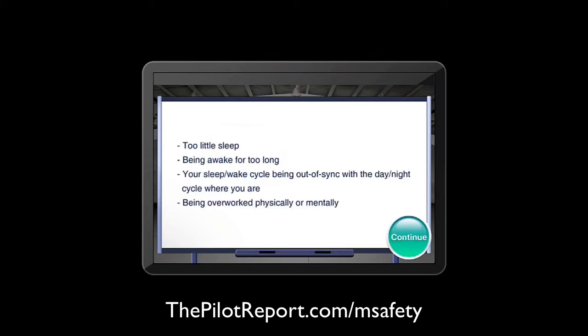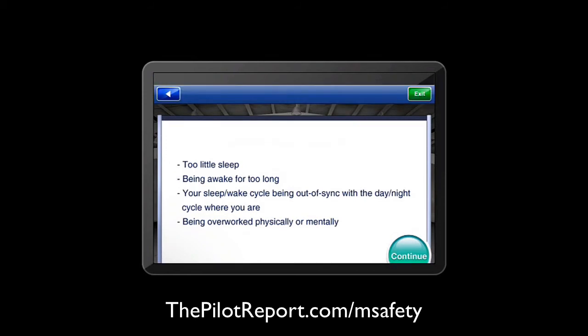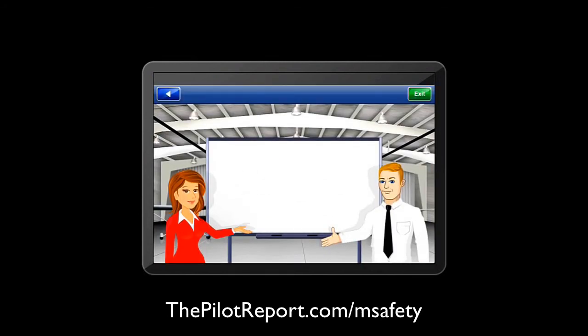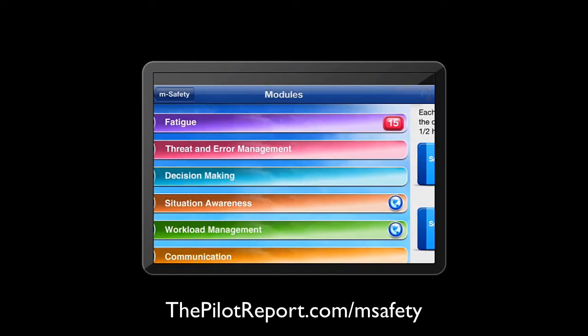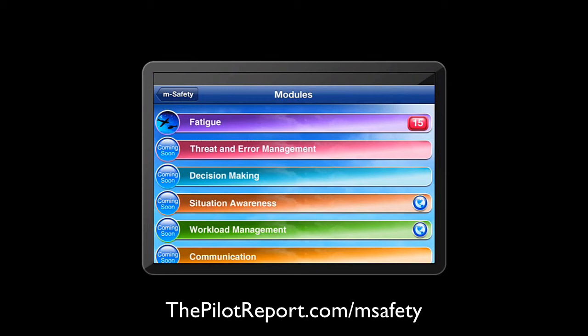We've reached a stopping point in the video demonstration as far as the module is concerned, but that's basically how it works. When you click on the module, you get video and audio content, and then a screen pops up with interactive information about fatigue. If you click the arrow button in the top left, it will start over. If you double-click and hit the exit button, it brings you back to the course and all the modules. To return to the main screen, click on modules. You'll see the number 15 on the right-hand side on fatigue, meaning there are 15 modules.